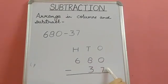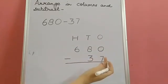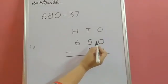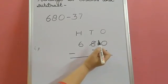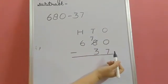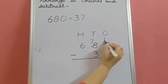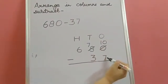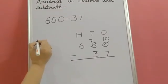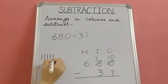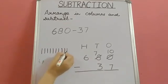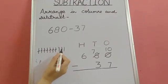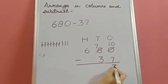Now 0 minus 7. Children, this is not possible. If you don't have anything, how can you give 7? So what we will do? We will go to the next column and borrow 1. This 8 will give 1 ten and become 7. And that 1 ten, we will make into 10 ones. So this is no more 0. This is 10. Now 10 minus 7. Yes, we can subtract 7 from 10. So we will make 10 lines. 1, 2, 3, 4, 5, 6, 7, 8, 9 and 10. And how many we have to cross? 7. 1, 2, 3, 4, 5, 6, 7. How many left? 1, 2 and 3. So we will write 3.